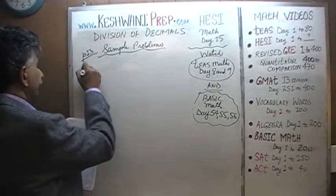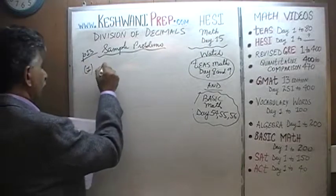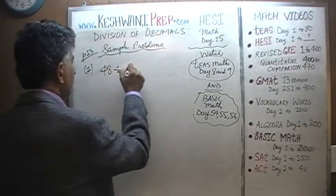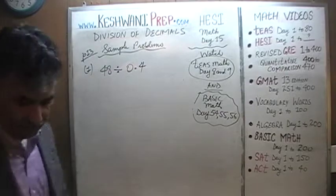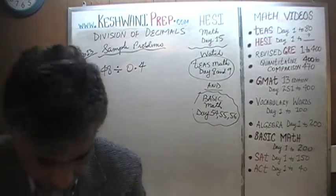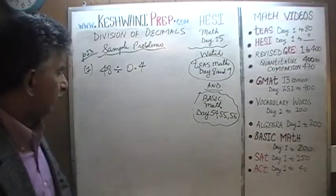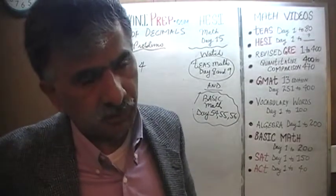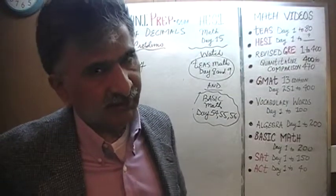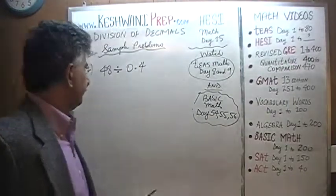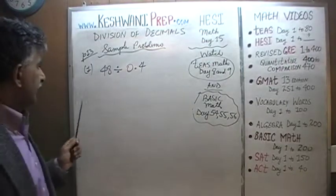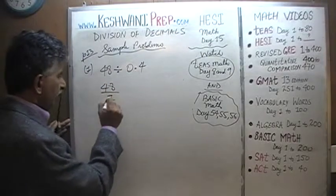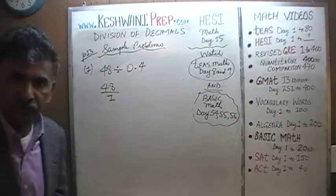Number 1: 48 divided by 0.4. The idea is to do these division problems without long division — convert them into multiplication problems. 48 is simply 48, which can be written as 48 over 1.